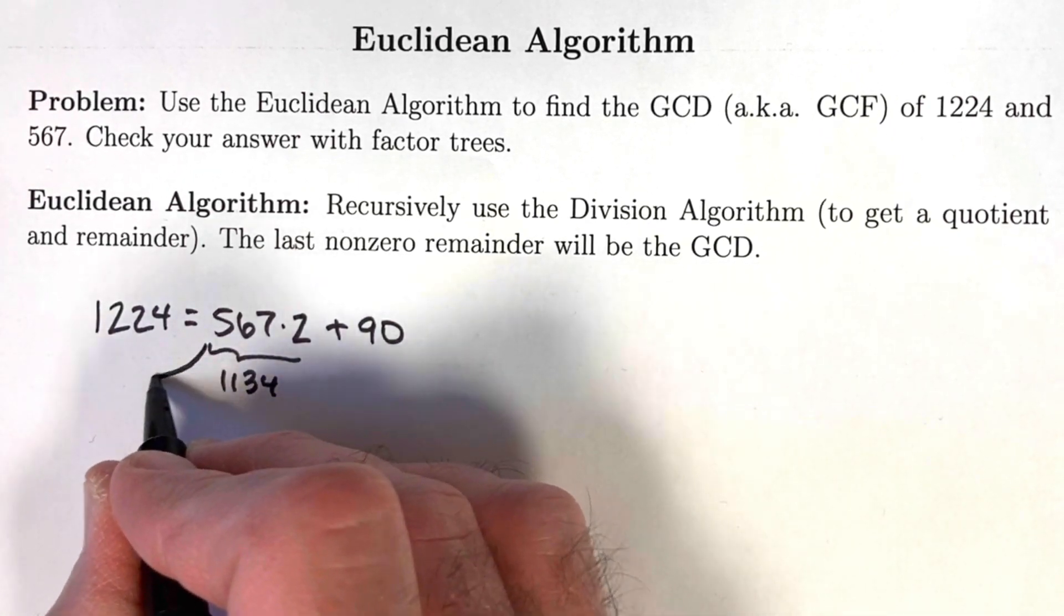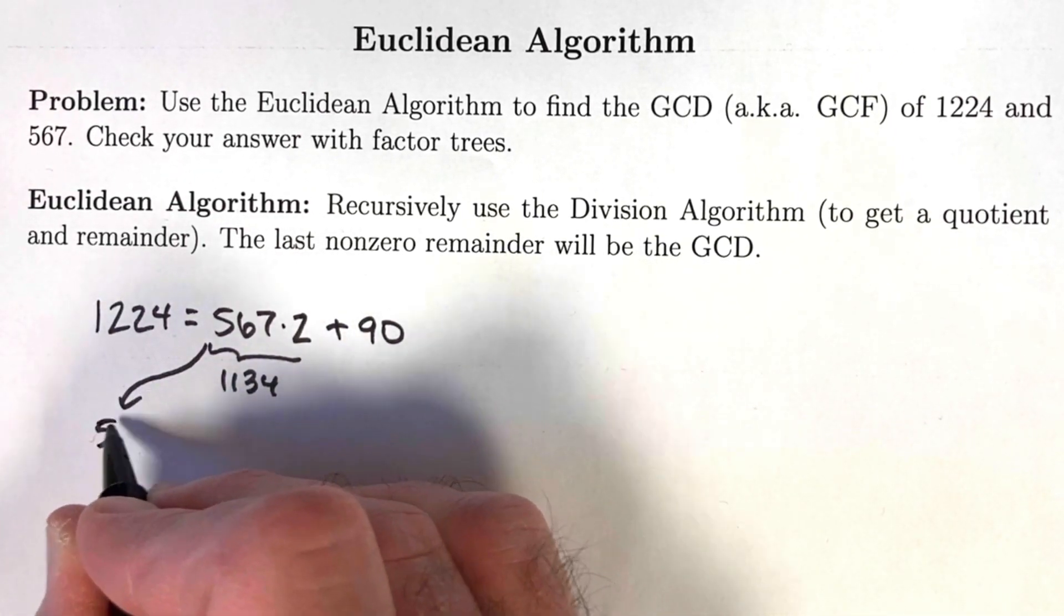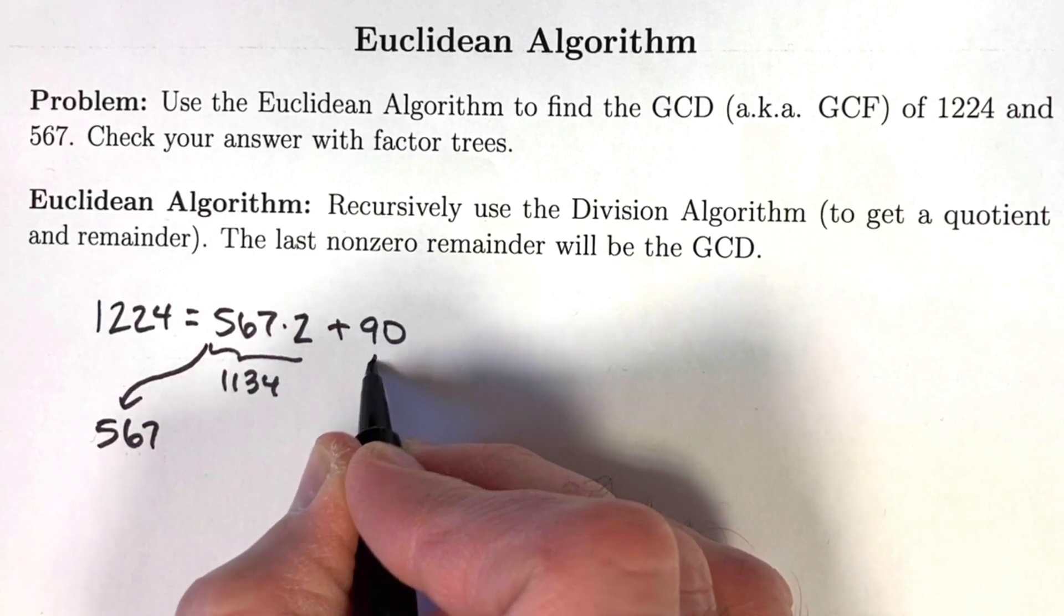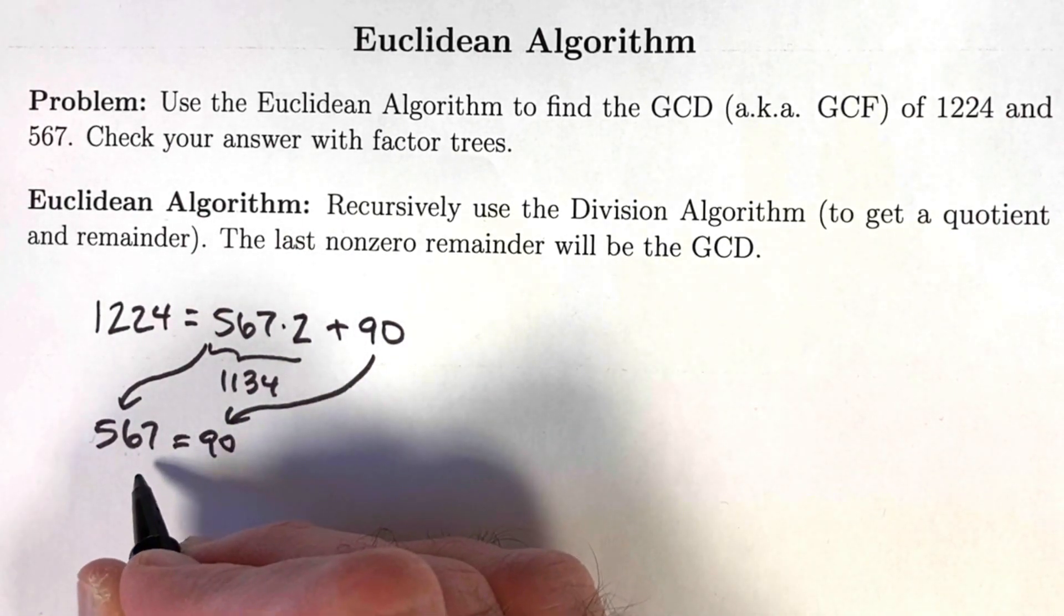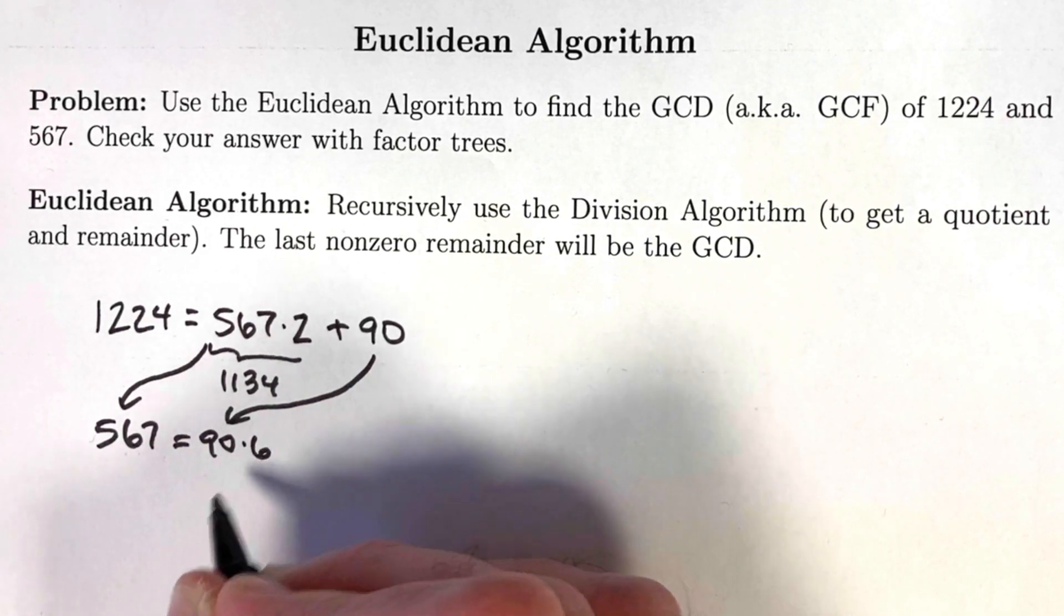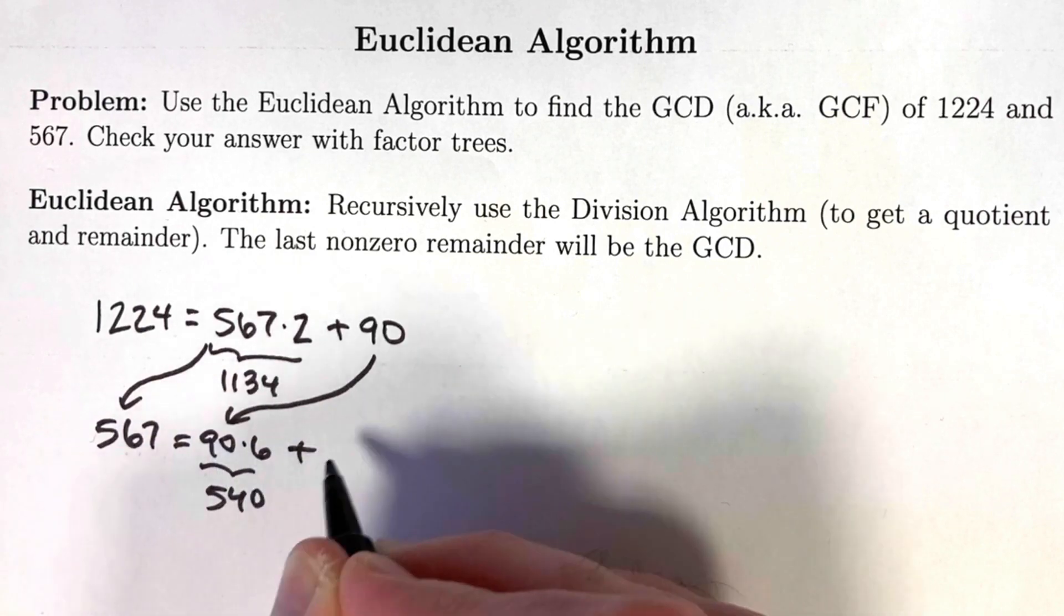Now take the 567, put it over here, and divide it by the remainder, 90. 90 goes into 567 six times. 90 times 6 is 540, and the remainder is 27.